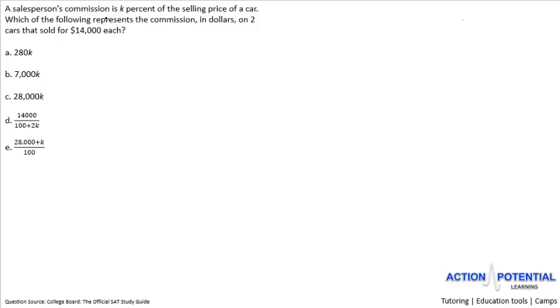A salesperson's commission is K percent of the selling price of a car. This first sentence gives you information on how to set up an equation to solve this problem. There are two keywords here that should allow you to help set up the problem.